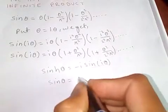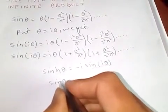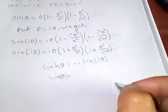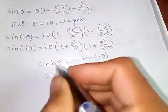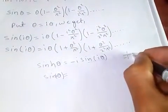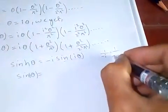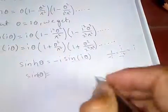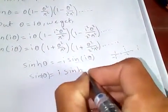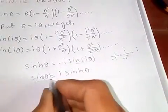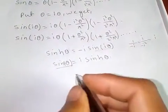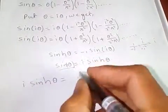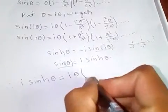Rearranging: sine(i·theta) equals (1 over minus i) times sinh(theta). Simplifying 1 over minus i gives i, so sine(i·theta) equals i times sinh(theta). Substituting this value, therefore i·sinh(theta) equals i·theta times (1 plus theta squared over pi squared) and so on.